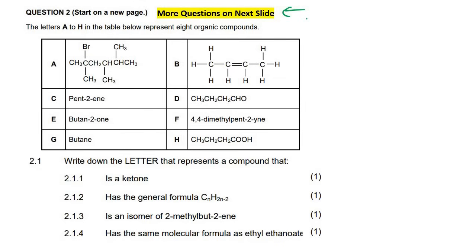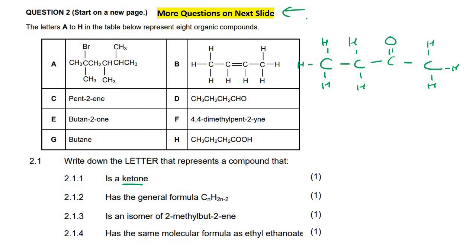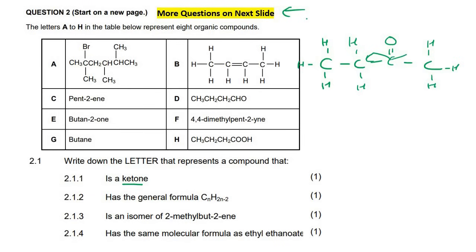It says write down the letter that represents a ketone. A ketone is a molecule that has a whole bunch of hydrogens and then a double bond oxygen. What's important for it to be a ketone is that the double bond oxygen on the carbon must be in between two other carbons. It mustn't be in between a carbon and a hydrogen — it must be in between two carbons.